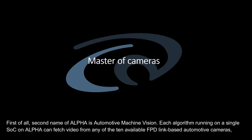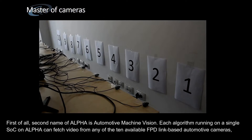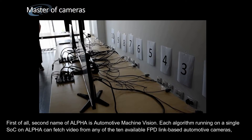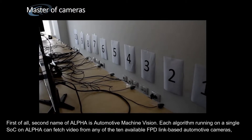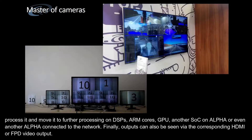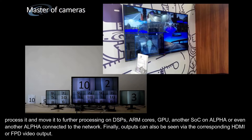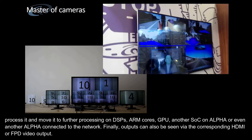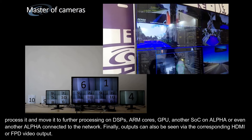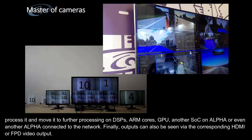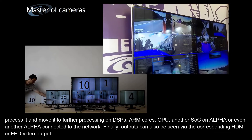A primary aim of Alpha is Automotive Machine Vision. Each algorithm running on a single SoC on Alpha can fetch video from any of the ten available FPD-Link based automotive cameras, process it and move it to further processing on DSPs, ARM cores, GPU, another SoC on Alpha, or even another Alpha connected to the network. Outputs can also be seen via the corresponding HDMI or FPD video output.